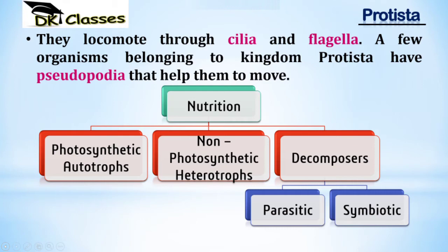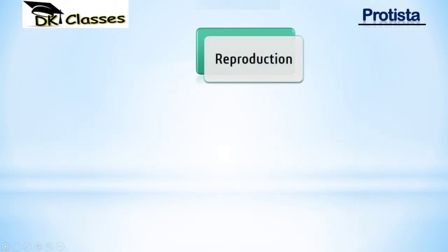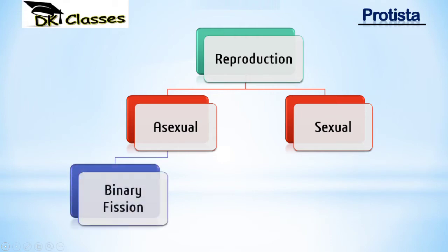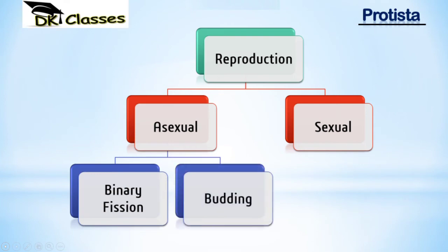Reproduction in Protista is of two types: asexual and sexual. Asexual is without the formation of gametes; sexual is with the formation of gametes. Asexual reproduction may be further of two types: binary fission, where one whole cell divides into two daughter cells, and budding, where a bud forms on the parent body.